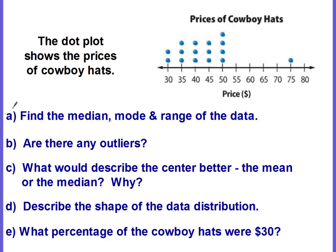So let's answer these questions. This dot plot shows the prices of cowboy hats. The price — the actual dollar amount — is the number line. The dots represent the number of hats that cost that amount. So how many hats cost $30? There are two dots, so that's two hats. How many hats cost $60? Here's our $60, but there are no dots, so zero hats cost $60.